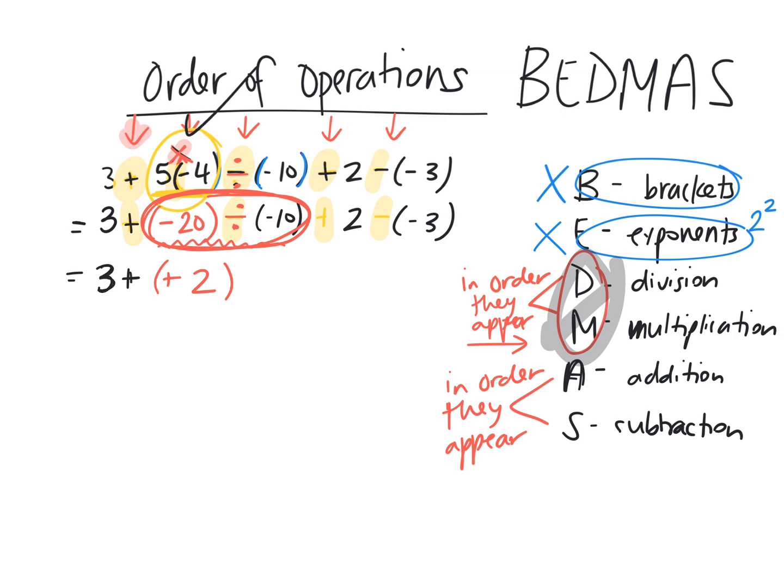Do I really need to write 3 plus positive 2? No, I could have just written this as 3 plus 2. So I'm going to write 3 plus 2 because I know the answer to this is 2. Now what do I write next? Plus 2, take away negative 3. So we have 3 plus 2, plus 2, take away negative 3. Do I have any more division or multiplication? Nope, we're done with that.